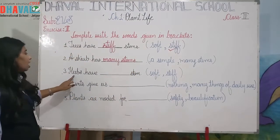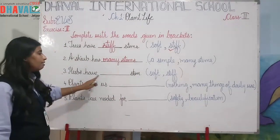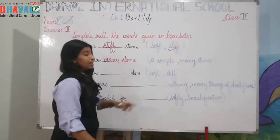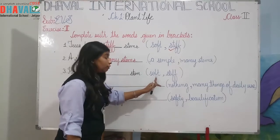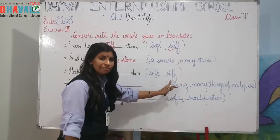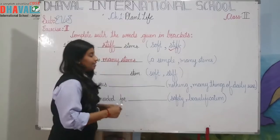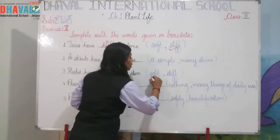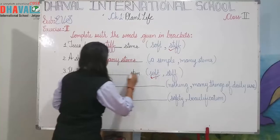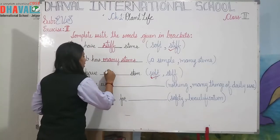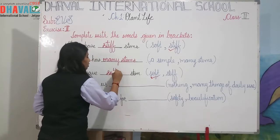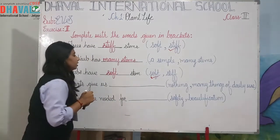Third one: hops have dash stems — soft or stiff? The answer is soft. Hops have soft stems.